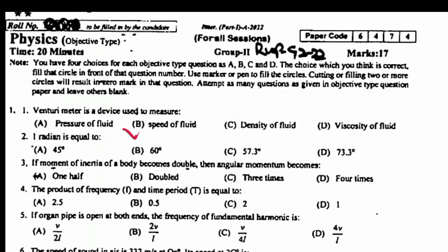1 radian is equal to 57.3 degrees. If moment of inertia of body becomes double, then angular momentum becomes double. The product of frequency F and time period T is equal to 1.